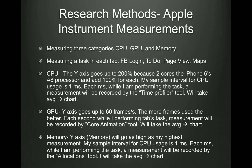I'll be using Apple Instruments to measure the performance of the apps in three categories: CPU, GPU, and memory. In each tab, I'll be measuring one task. In tab one, logging into Facebook successfully. For tab two, adding and deleting a to-do list item. For tab three, swiping through all three colored page views. And waiting for location to be found in the fourth tab. I'll be using my phone plugged into the computer running Apple Instruments so I can use the real apps instead of the simulator. For the CPU, the Y-axis goes up to 200% because there's two cores in the iPhone 6's A8 processor, and you have to add 100% for each. My sample interval for CPU usage is one millisecond.